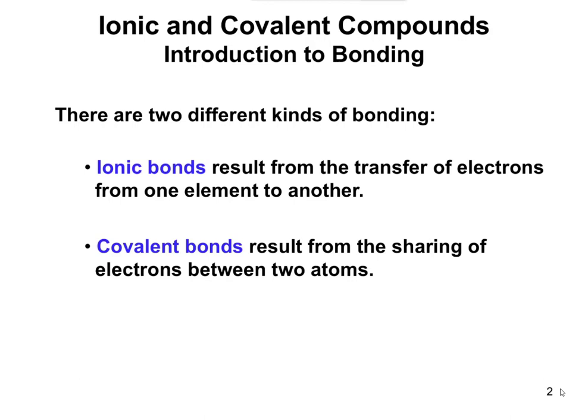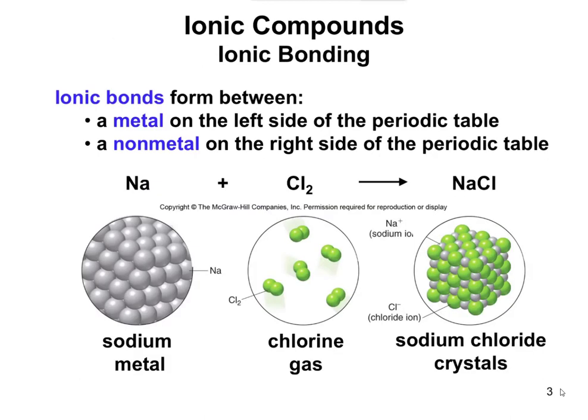So there are two different types: ionic bonds transfer electrons from one atom to the other, and covalent bonds result from the sharing of electrons. We're going to start off the chapter by looking at ionic bonds. Ionic bonds form between a metal and a non-metal. Metals are on the left side of the periodic table, and non-metals are on the right side, to the right of that staircase where the metalloids are.